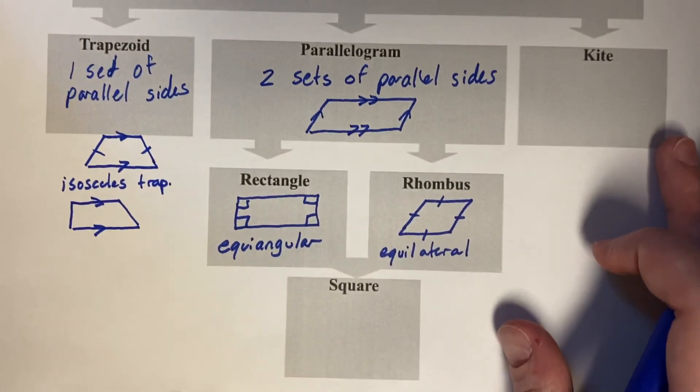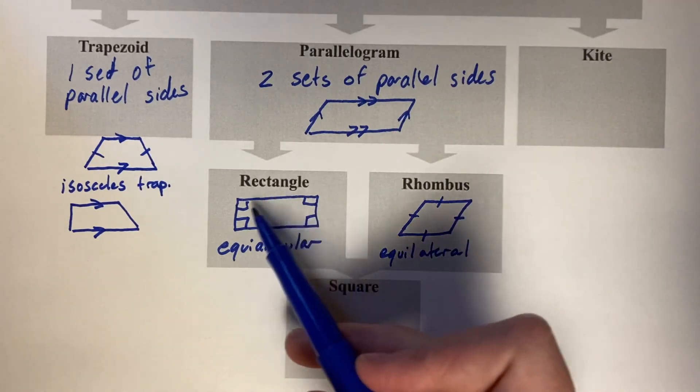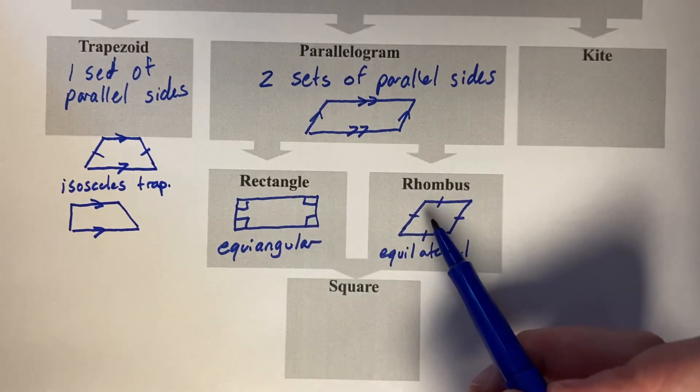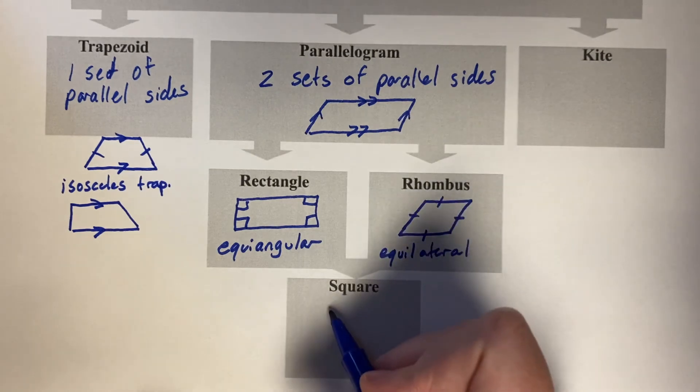And then finally, if you combine these two features, so if all the corners are 90 degrees and all the sides are the same length, then you get what's called a square.